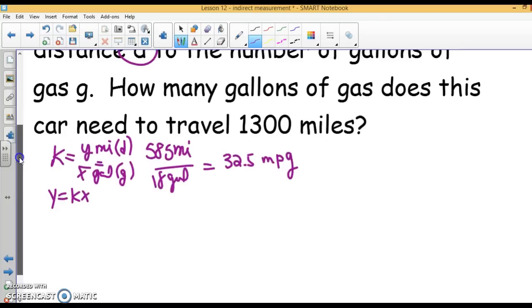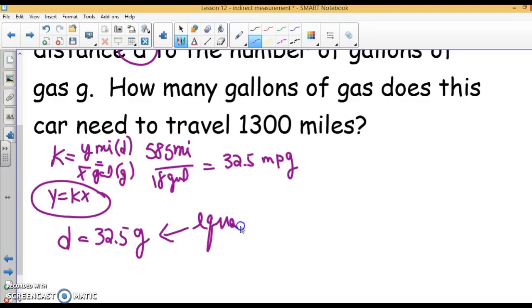Once we've done that, they want us to write an equation. What variable are we using for y? Look up here. I organized it. y is d. So d equals k we found to be 32.5 and x is g. Your distance equals 32.5 times the number of gallons. That is your equation. Once you have your equation, we can answer any question.